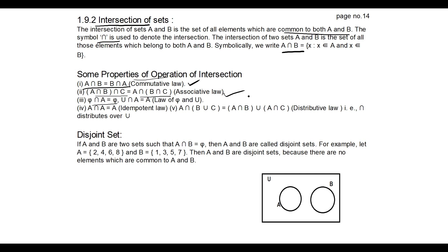The properties of intersection: Commutative — A intersection B equals B intersection A. Associative — (A intersection B) intersection C equals A intersection (B intersection C). Null set intersection A equals null set, since the null set has no elements. Universal set intersection A equals A, as the common elements between U and A is A. Idempotent — A intersection A equals A. Distributive law — A intersection (B union C) equals (A intersection B) union (A intersection C), and similarly A union (B intersection C) equals (A union B) intersection (A union C).